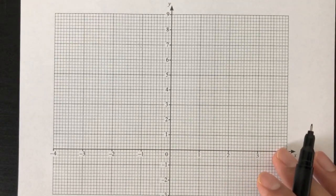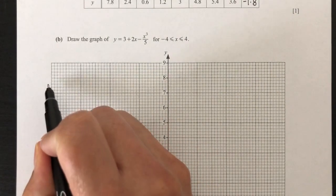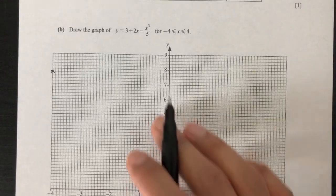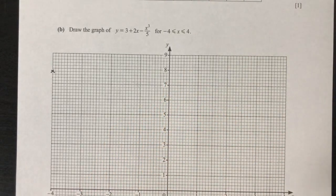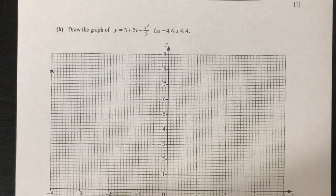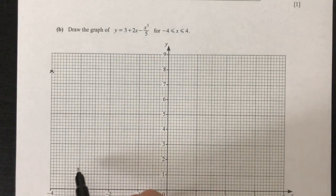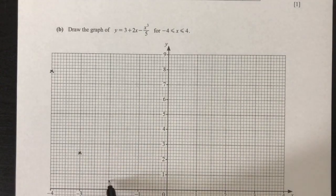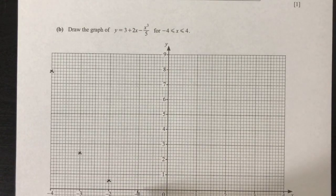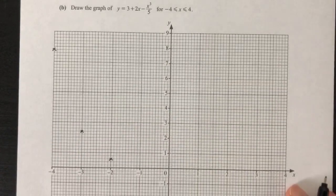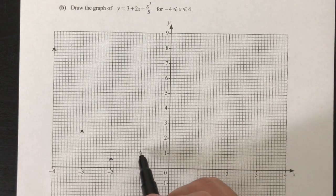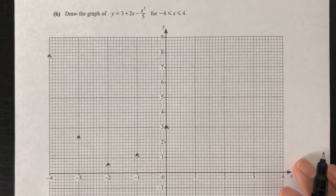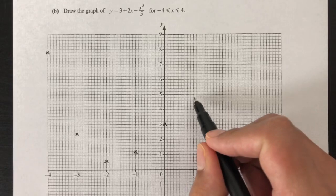So we have minus 4, 7.8, that will be about right here. Usually I make really silly mistakes when I plot the points, I misread these scales. Make sure that the points are really accurate. Then we have minus 3, 2.4, so 2.4 is right here. Then we have minus 2, 0.6. Then minus 1 will be 1.2. Then we have 0, 3. Then we have 1, 4.8. Where's 4.8? 4.8 will be right here.